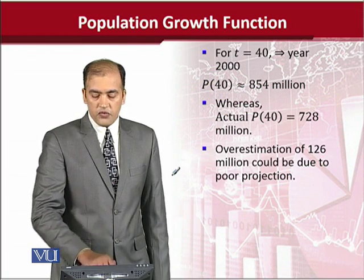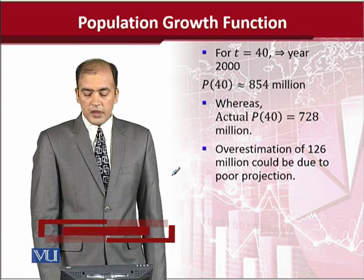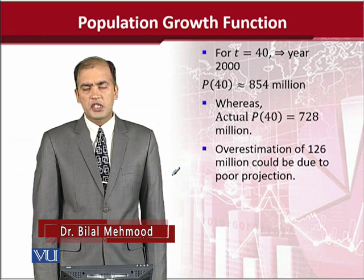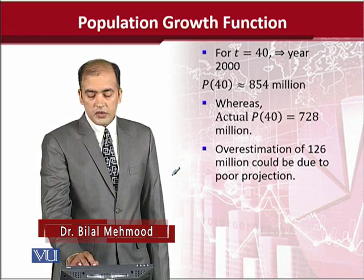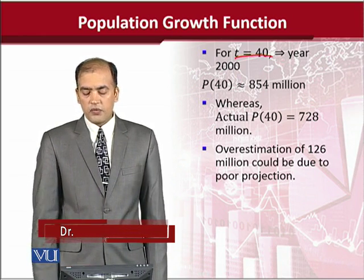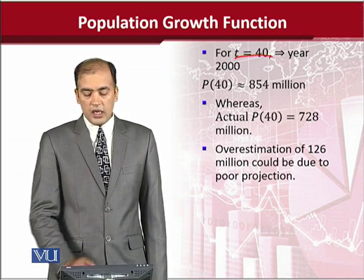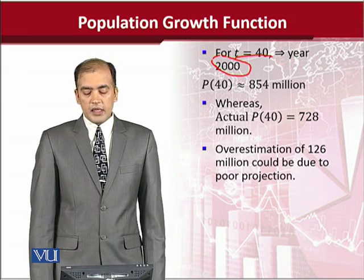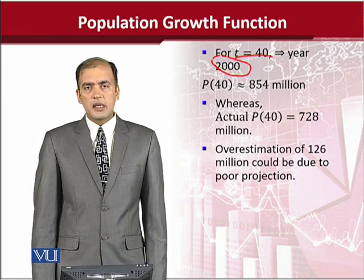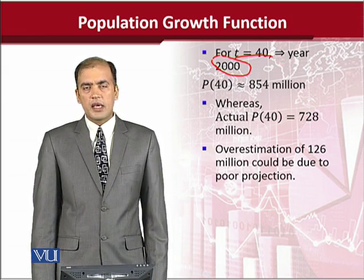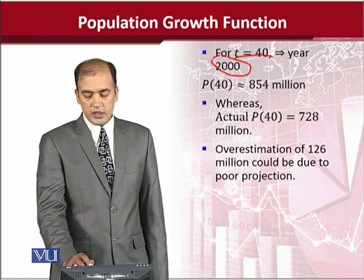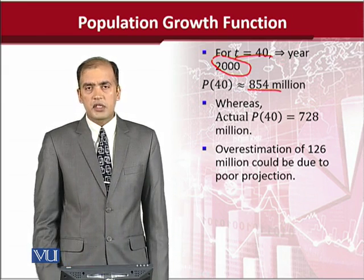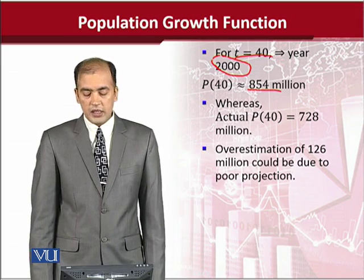We can assume different values to elaborate the function and get more meaningful information. We are now assuming that 40 years have passed and we are in the year 2000. In the year 2000, we can easily estimate the value of the population by putting the value of t into the function.